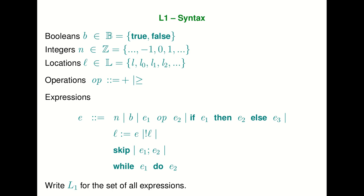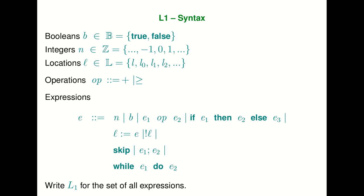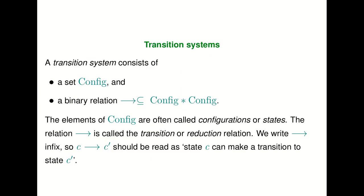Now we're going to talk about how these expressions evaluate. When I described each expression, I said informally that 'l := e' is doing some assignment, and 'if e1 then e2 else e3' is a Boolean conditional. But right now all we have is the syntax — inert data that doesn't do anything. In order to give it semantics, we have to formally specify how these expressions evaluate. The tool we use to do this is what are called transition systems.